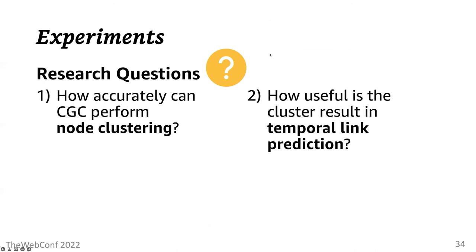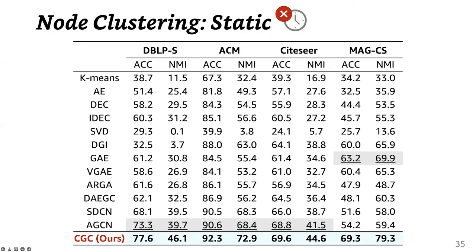In experiment, we answered these two research questions. First, how accurately can CGC perform node clustering? And second, how useful is the cluster membership learned by the method in temporal link prediction? These are node clustering results over four static baselines where we are showing two widely used metrics on clustering quality. Our proposed CGC consistently outperforms all static baselines shown here, achieving up to 28% higher clustering accuracy than the best deep graph clustering baseline.